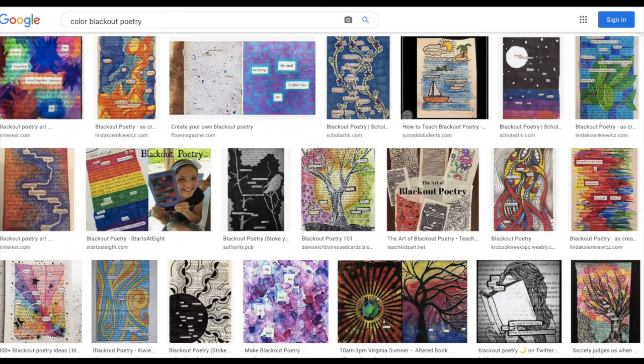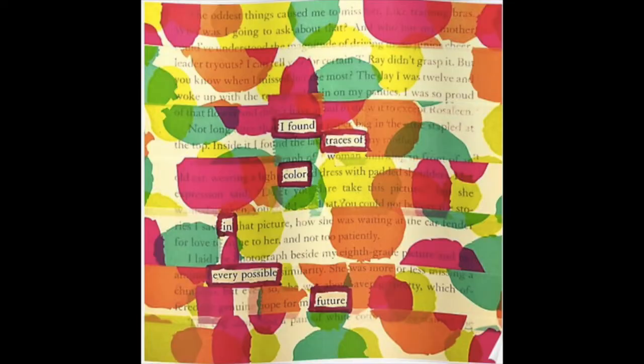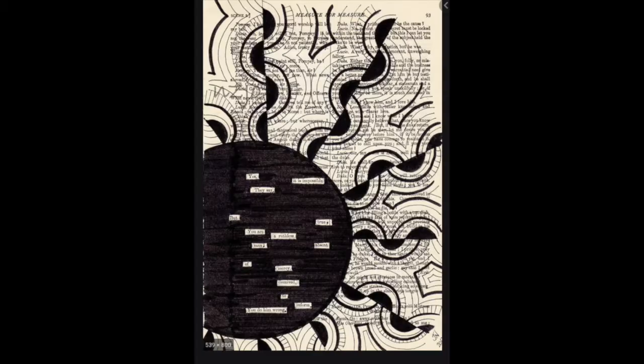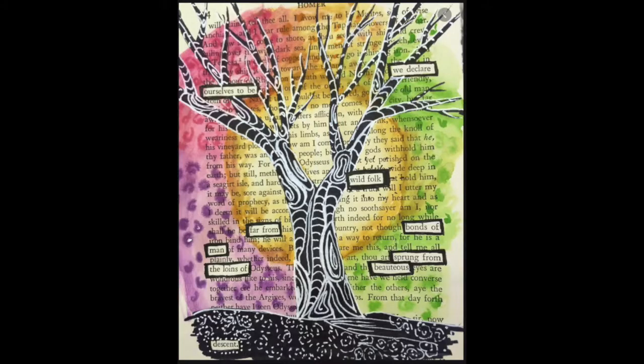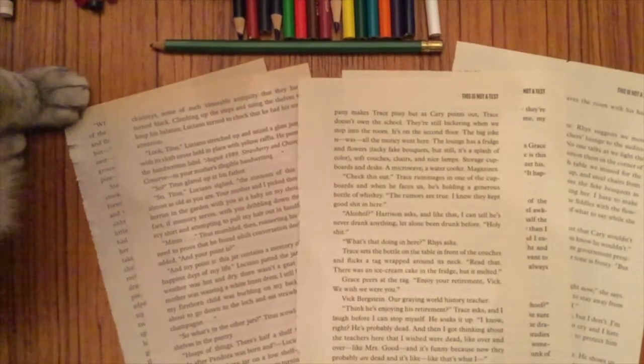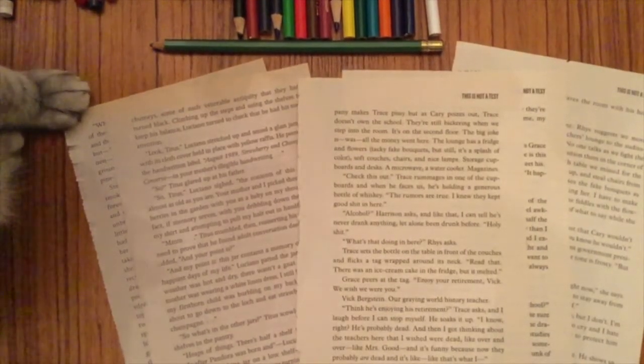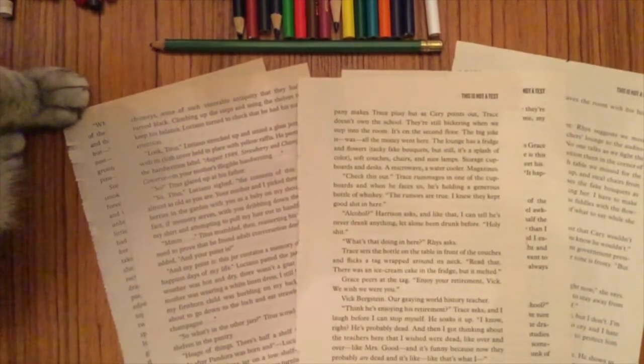Now I'm going to show you some pictures of blackout poetry that isn't black, that has different colors and different shapes and different kinds of drawings on it. So take a look. There are some really nice colored blackout poetry pictures here. You can look on Google if you want to find some others, but these are some of my favorites. I especially like this tree. Now there are some videos online that will tell you how to make really nice blackout poetry and I'm going to show you too.